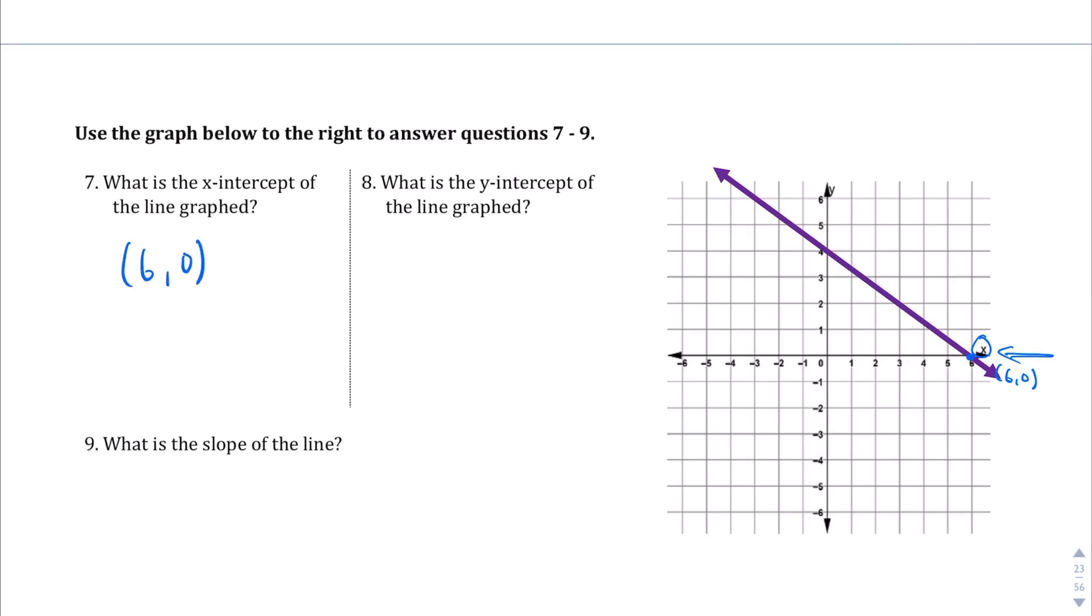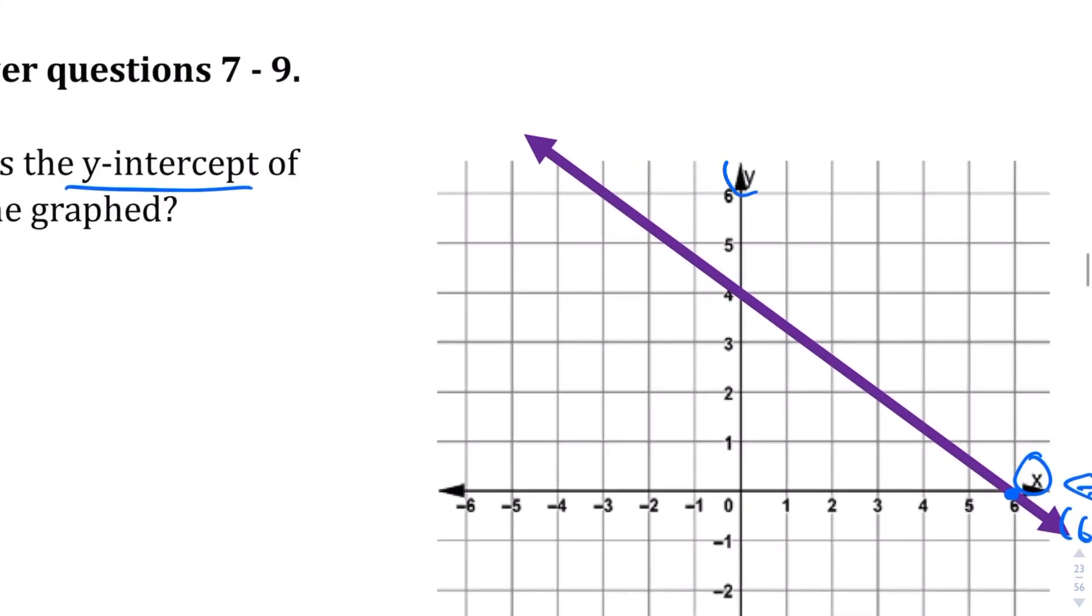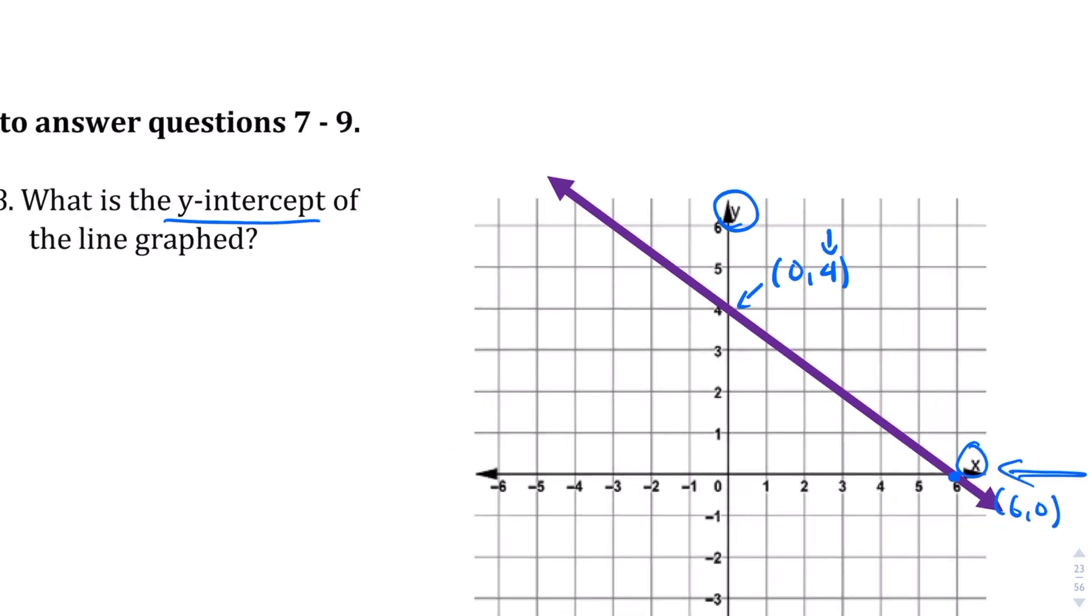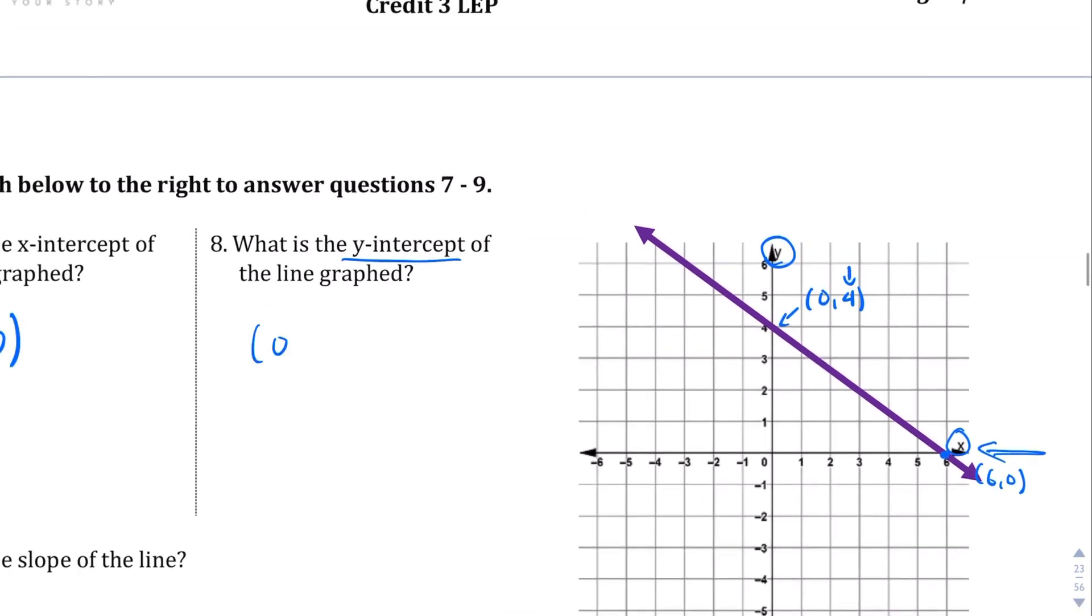Question 8 is very similar except now they want the y-intercept. So the y-intercept is the one labeled y. It's the vertical up and down axis of this graph. And we want to know where it crosses. Well, it crosses right here at 0, 4, with 4 being the y value there. So the answer to question number 8 is going to be 0, 4.